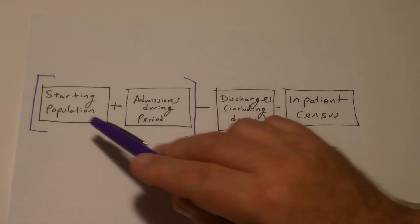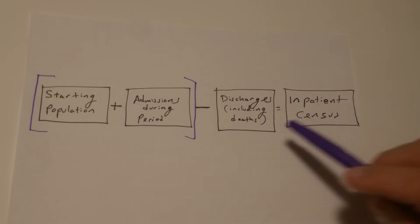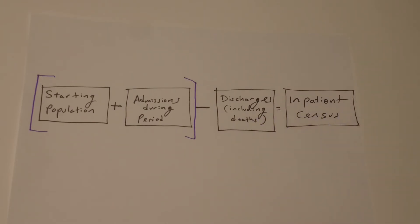So, again, you're going to take the starting population, you're going to add the admissions during the period to that, and then you're going to subtract from that the discharges, including deaths, and that's going to give you your inpatient census.